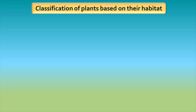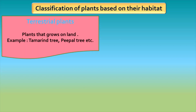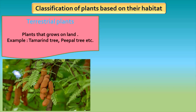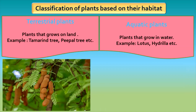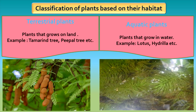Some plants grow on land and some in water. Based on the place where they grow, plants are classified as terrestrial plants and aquatic plants. Plants that grow on land are called terrestrial plants — for example, peepal tree, tamarind tree, etc. Some terrestrial plants that grow in dry desert regions are called xerophytes — for example, cactus plant, acacia tree, etc. Plants that grow in water are called aquatic plants or hydrophytes — for example, lotus. Aquatic plants like hydrilla that grow under water are called submerged plants.